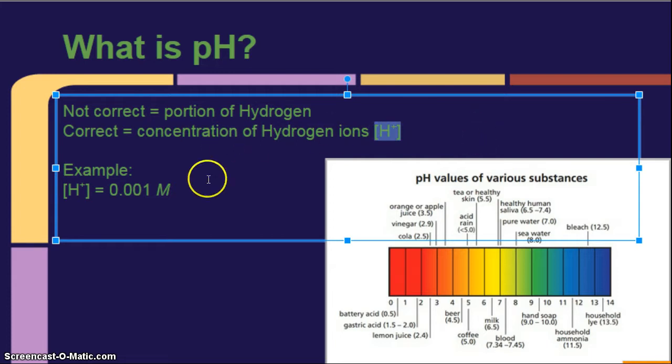Concentration of hydrogen ions. For example, my concentration of hydrogen ions could be 0.001 molar. That's right, stuff from last unit.